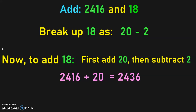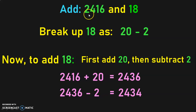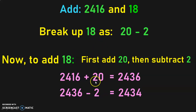Now, we will have to subtract 2 from this answer. 2436 minus 2 will give you the answer 2434. Hope you understand that it is much faster than the vertical method of addition, where you start from the ones place, take the carry over to the tens place and proceed. With this method, you simply split 18 as 20 minus 2, add 20, then subtract 2 and get the answer 2434.